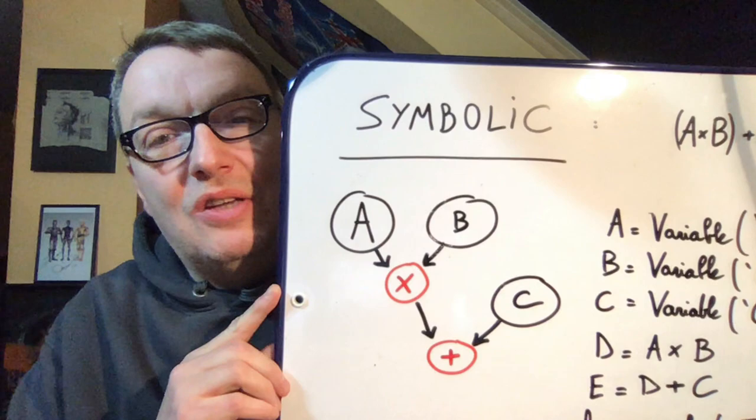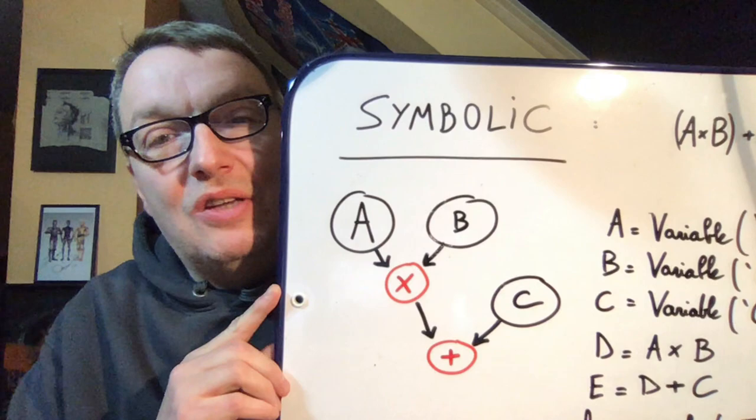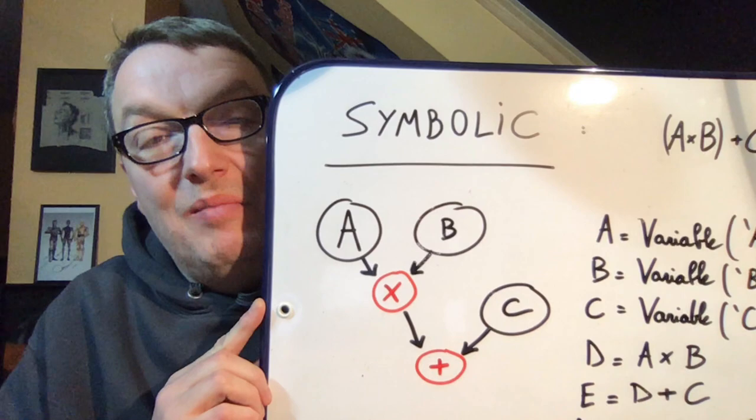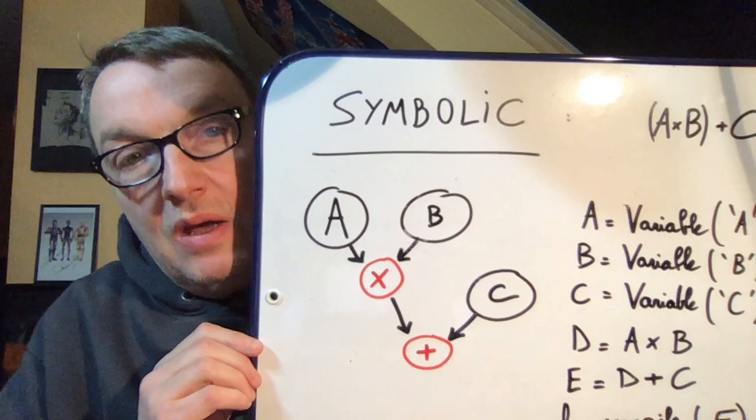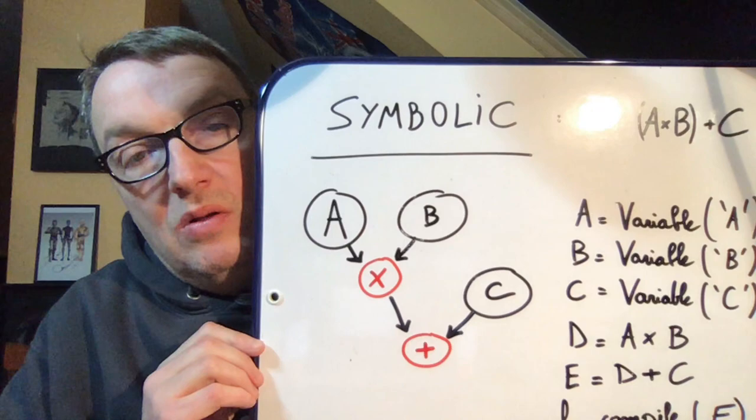When you're working with symbolic programming, you first define the execution graph. So we would need two variables A and B, we would need a multiplication operator, and we would need a third variable C and an addition operator.